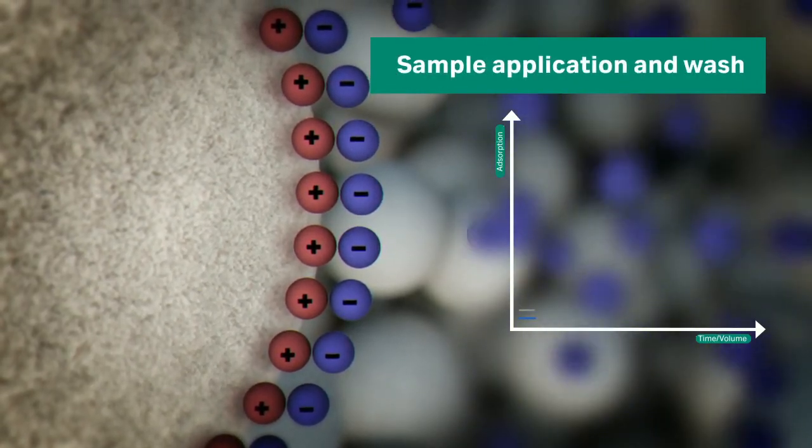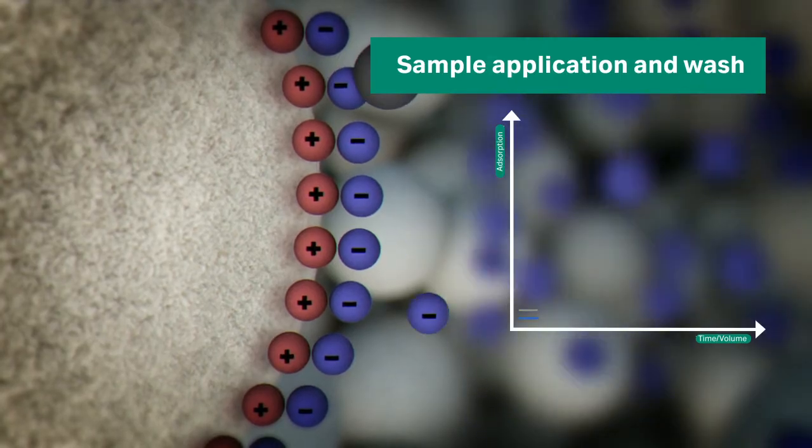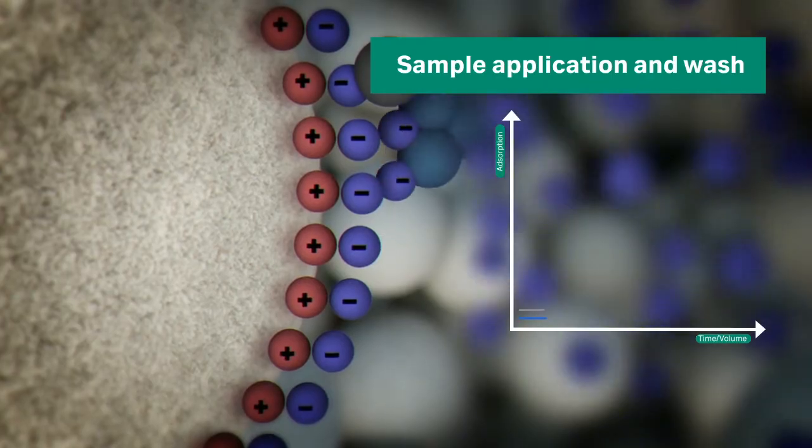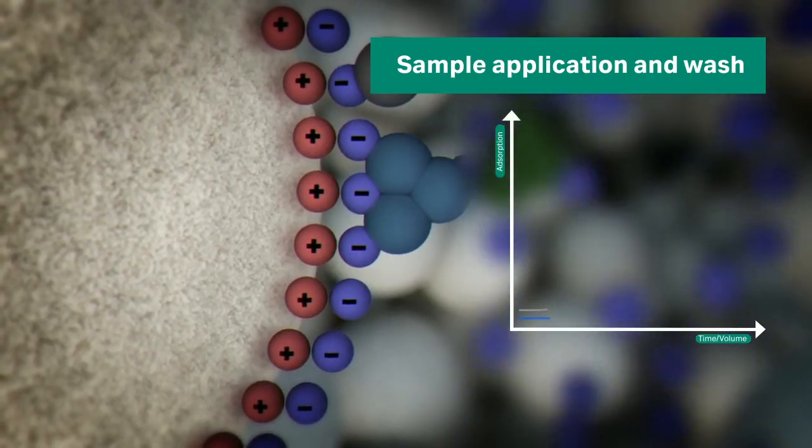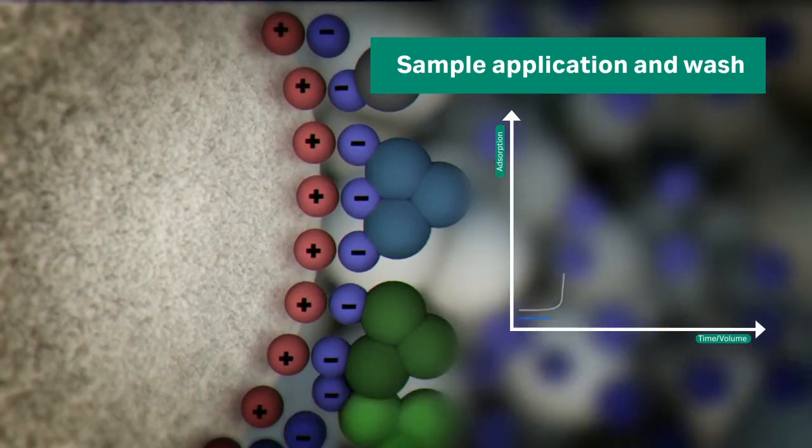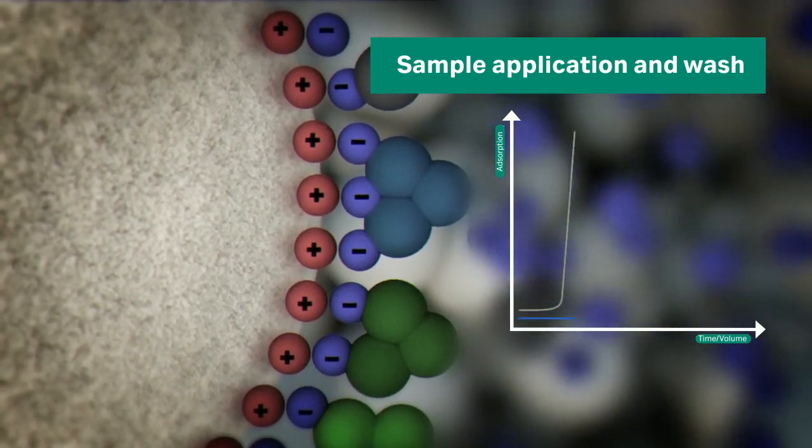The second step is sample application and wash. The goal in this step is to bind the target molecules and wash out all unbound material. The sample buffer should have the same pH and ionic strength as the starting buffer in order to bind all appropriately charged proteins.